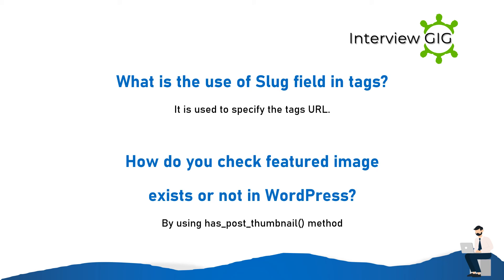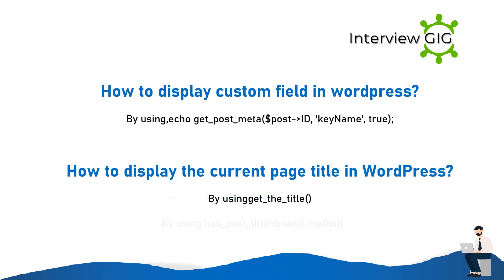How do you check if a featured image exists in WordPress? By using the has_post_thumbnail() method. How do you display a custom field in WordPress? By using echo get_post_meta($post_id, 'key_name', true).